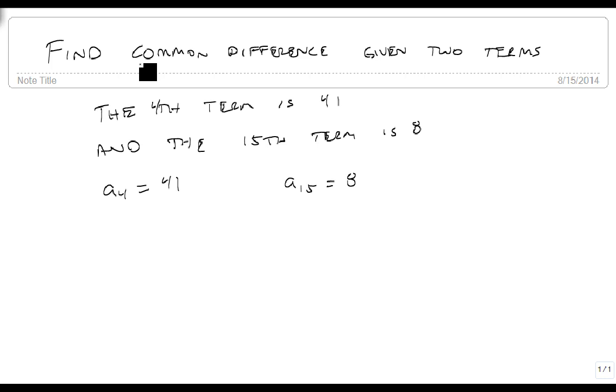And what we want to find is the common difference between these two. Well, if you remember that I said that our an equals d times n minus 1 plus a1 is similar to